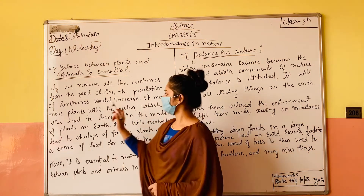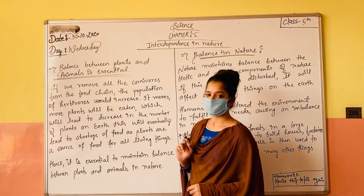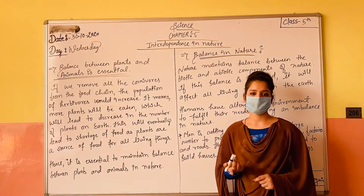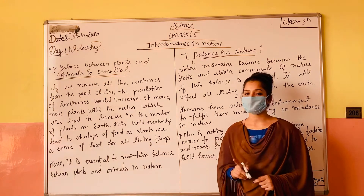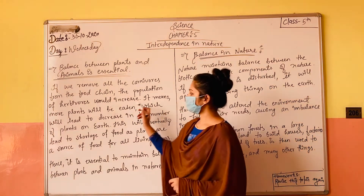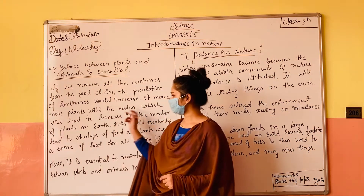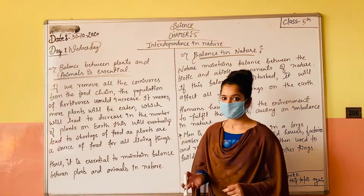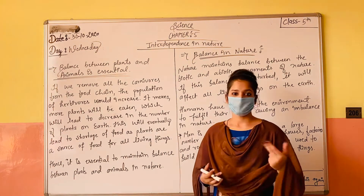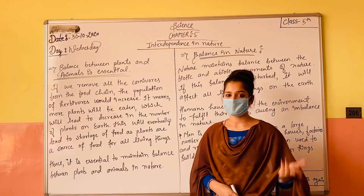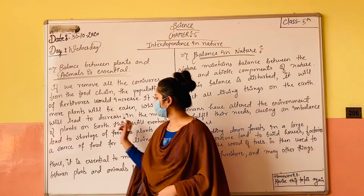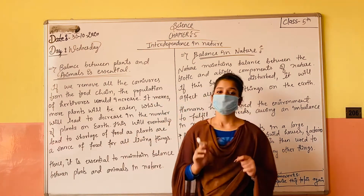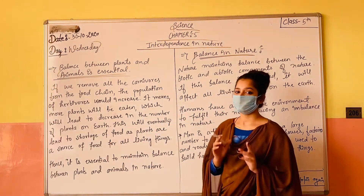Herbivores ki sankhya — herbivores ki population bahut zyada badh jaayegi. Aur kya hoga? It means more plants will be eaten. Agar herbivores zyada ho jaayenge toh herbivores plants khaate hain, toh plants bahut zyada maatra mein khaaye jaayenge, which will lead to a decrease in the number of plants on Earth.